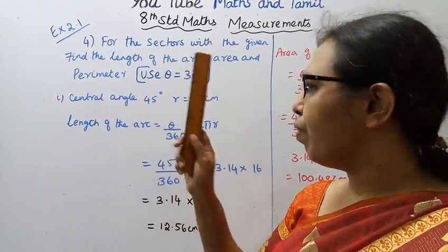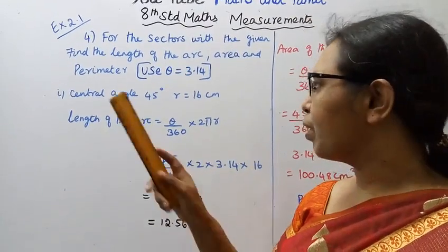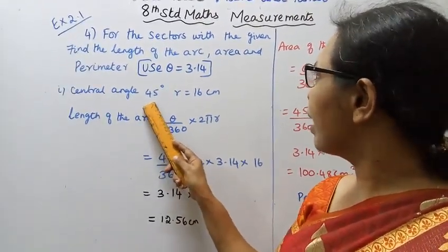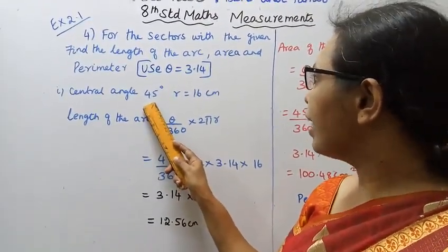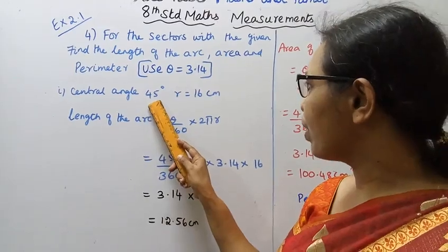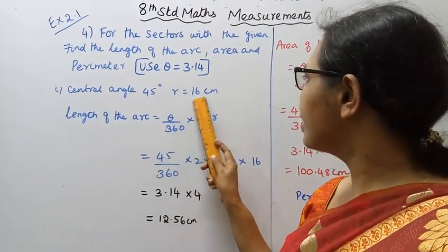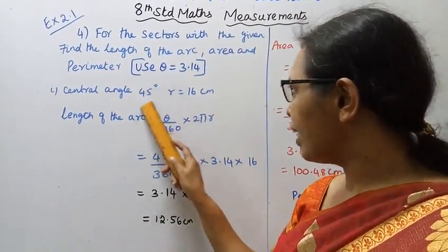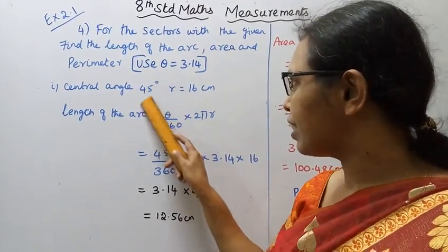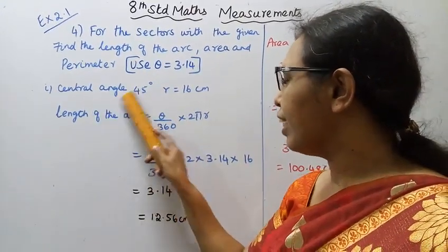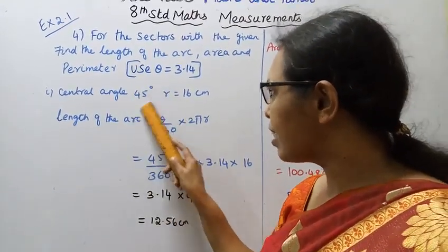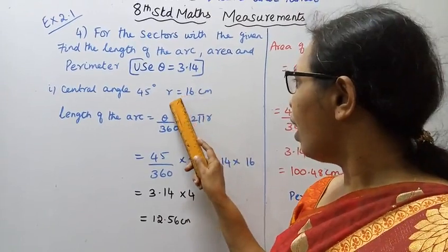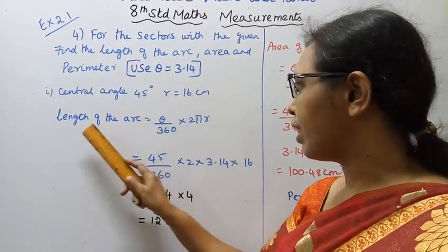Now, the governing angle — what is the angle? Angle is 45 degrees. R is 16 centimeters. The central angle theta is 45 degrees and the radius is 16 centimeters.